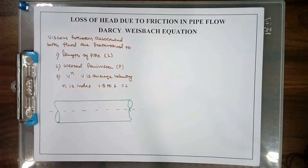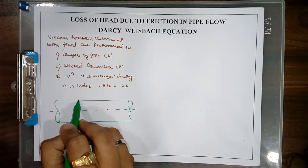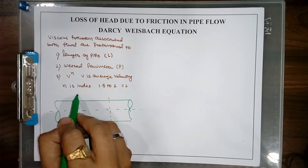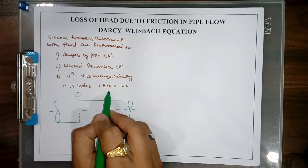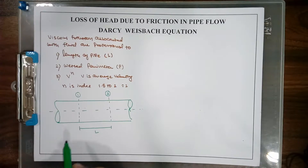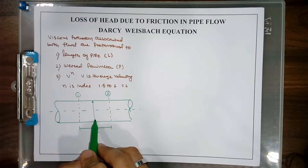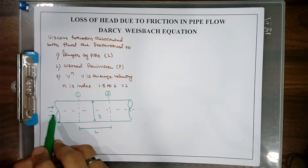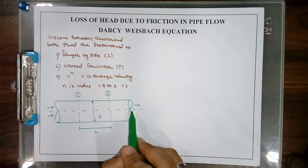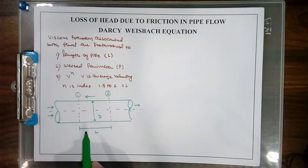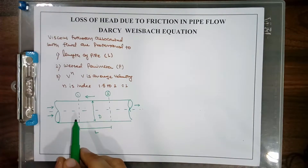We are going for the derivation of Darcy's Weisbach equations. We consider two sections in the pipe — section 1 and section 2. The length between these two sections is L and the diameter of the pipe is D. The flow happens in the direction from left to right, so the frictional resistance generated due to the viscous effect acts in the opposite direction to the flow.